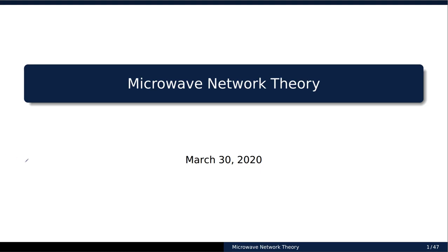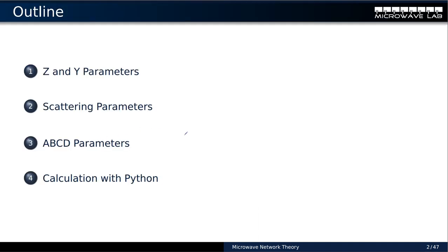Hello everybody, welcome back to our lecture series on microwave engineering. Today's topic is the network theory for microwave circuits — we apply our normal linear network theory to microwave structures and see what happens. This lecture is divided into four sections: first, we look back at Z and Y parameters; then I introduce scattering parameters; then ABCD parameters; and I end with a tiny introduction on using Python.